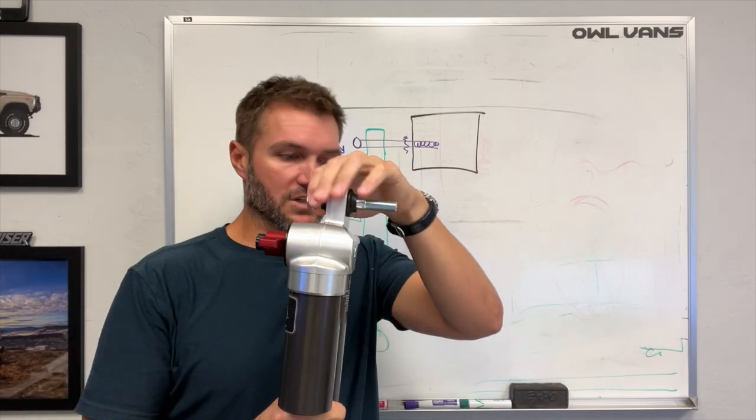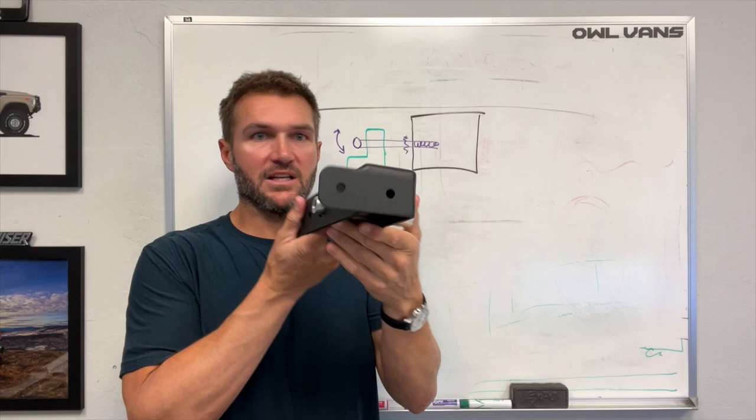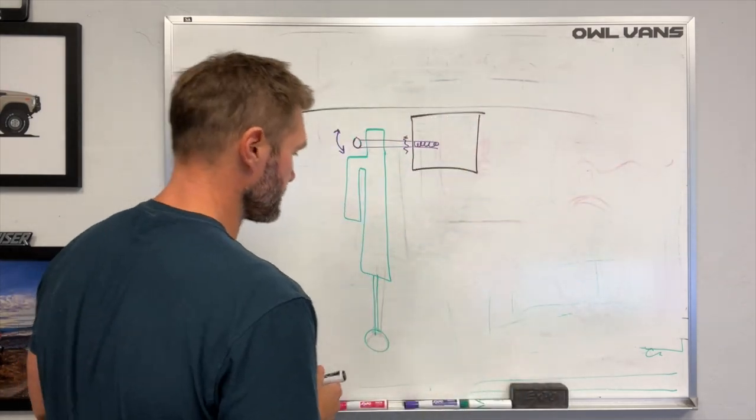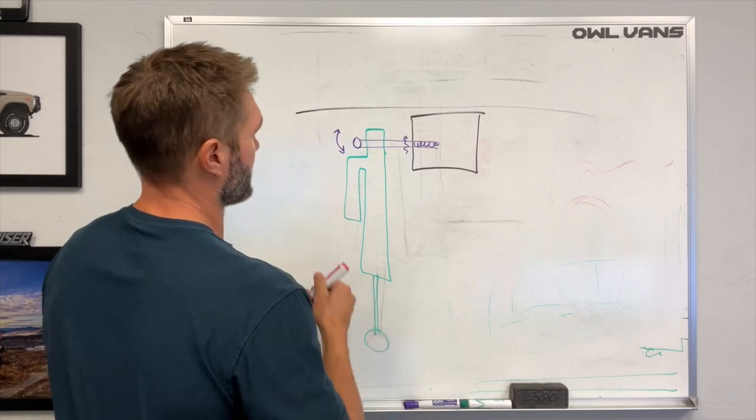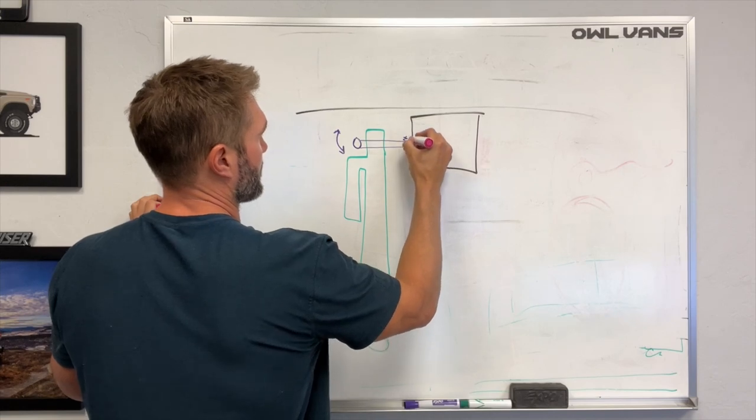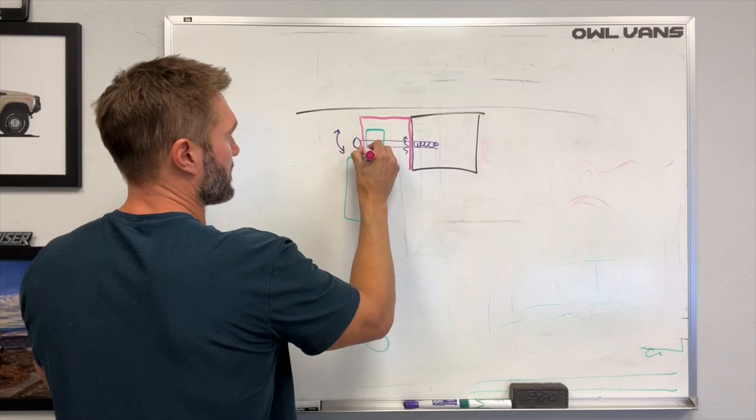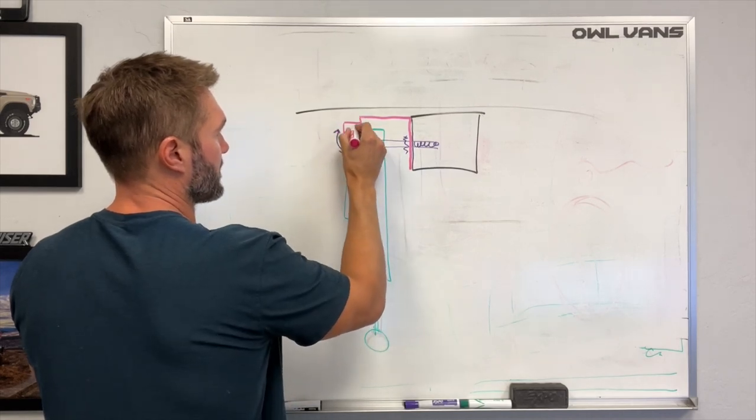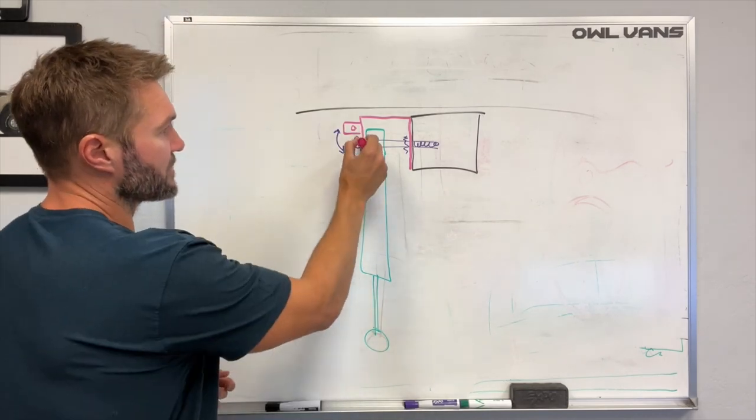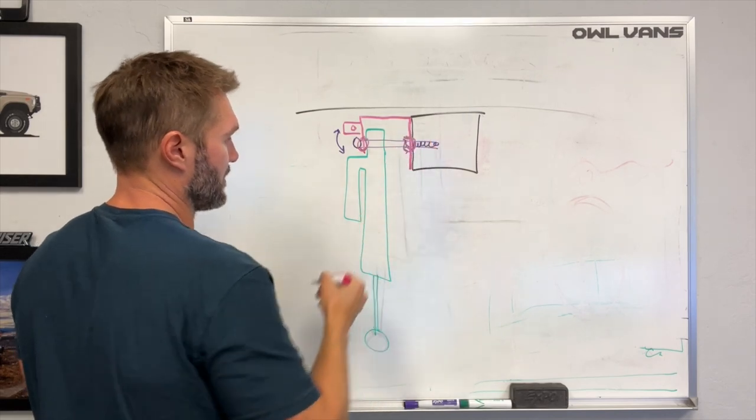And that's essentially what the Baja bracket does. So this goes in next to the unibody. So we'll draw it in here. Let's do pink. So the Baja bracket will come in here, go along the unibody over the top, and come down on this side. And then in the back, it's going to bolt in as well. And what this does is it puts support on two sides of that bolt.